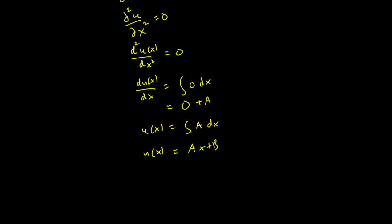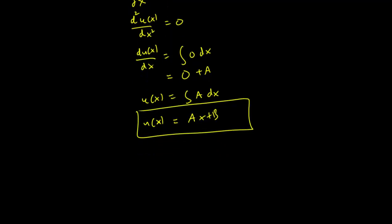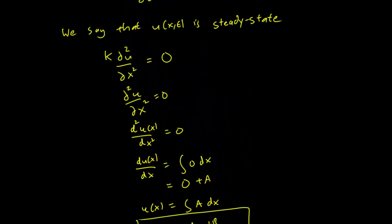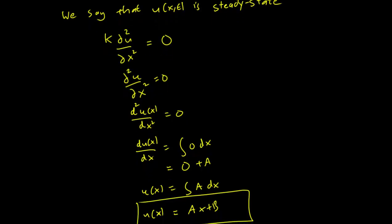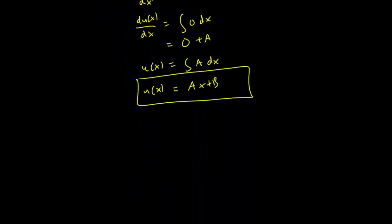So in this case, our steady state solutions will almost always look like this, u equals ax plus b. So let's think about how to solve a steady state problem given boundary conditions.